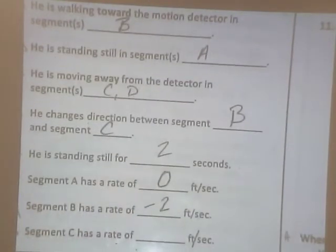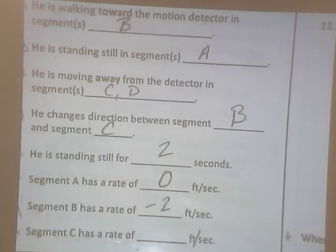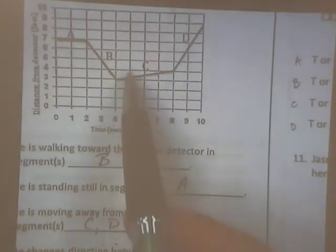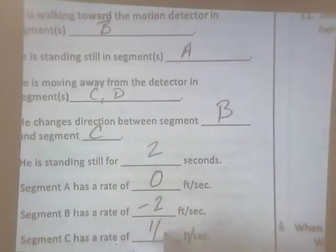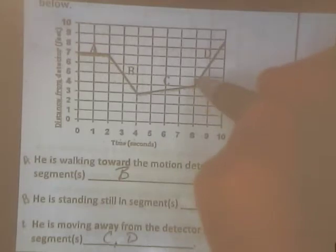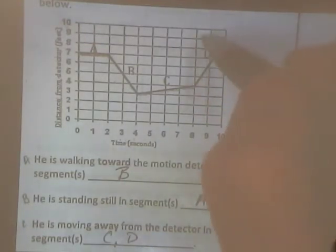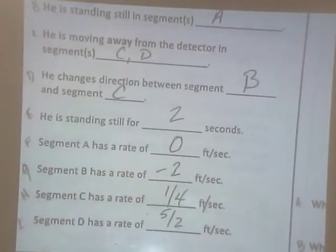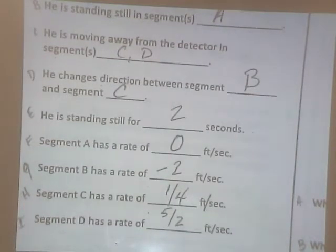So segment B. B is negative two. C, segment C. Rise over run. One over... one, two, three, four, it looks like. Four. Right? And then D. Rise. One, two, three, four, five. Over one, two. Two, so five halves.